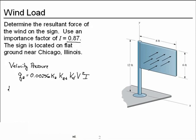The resultant force on the sign is given by the following relationship. Once we have the velocity pressure, multiply by G and CF and AF, where G and CF are again modifiers and AF is the surface area of the sign.